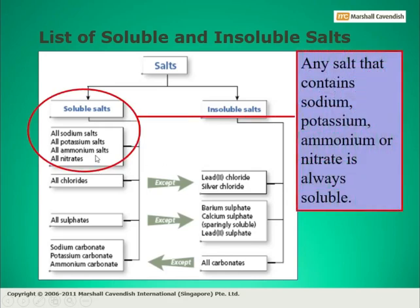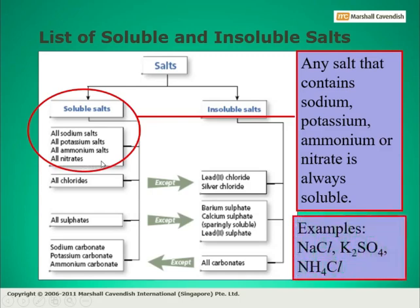You can see that all sodium salts, all potassium salts, all ammonium salts, and all nitrates are always soluble. It means those salts that have sodium, potassium, or ammonium as the cation are always soluble, and those salts that have nitrate as the anion are always soluble.